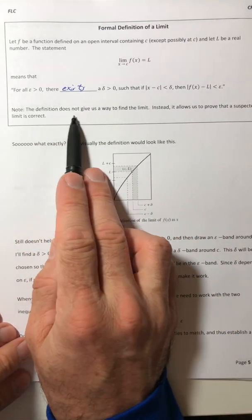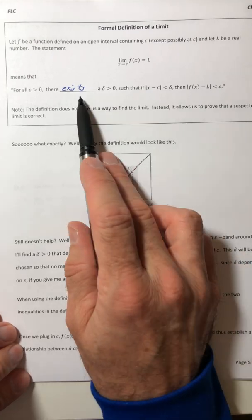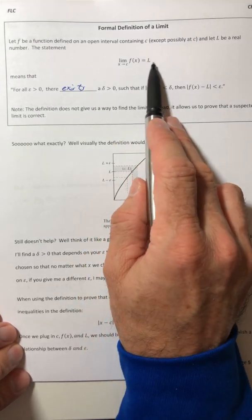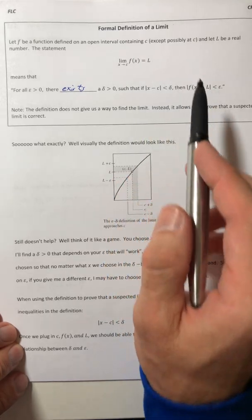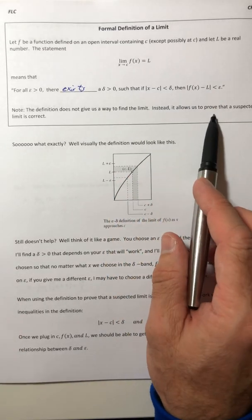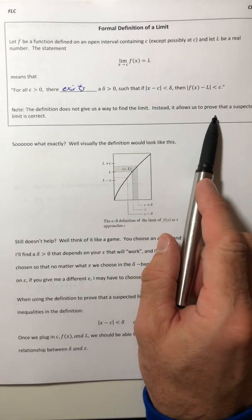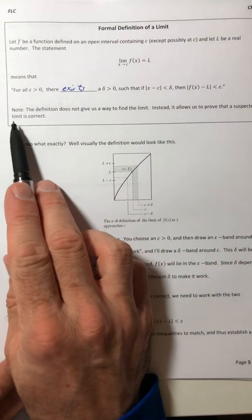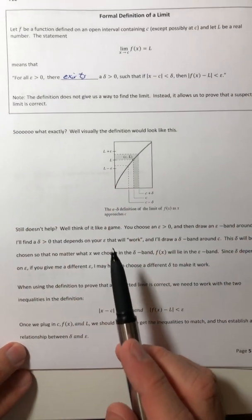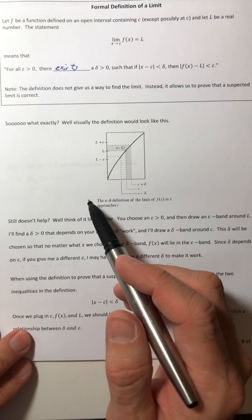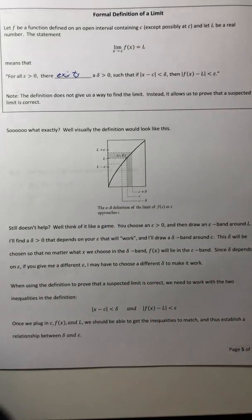So the definition, it doesn't give you a way to figure out what this limit actually is. It's not a way to find L. Instead, it allows you to prove that a suspected limit is correct.